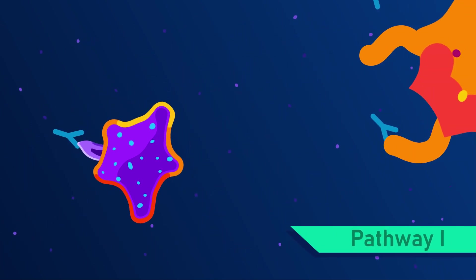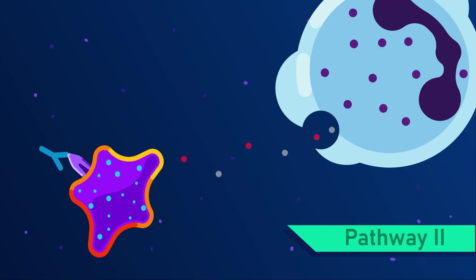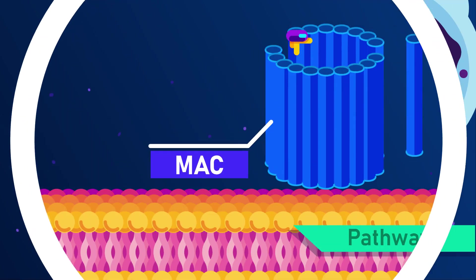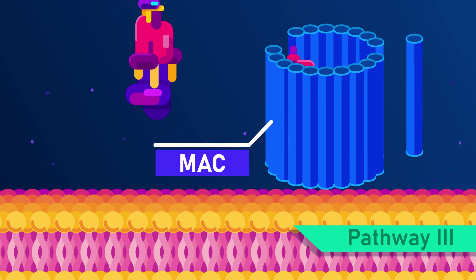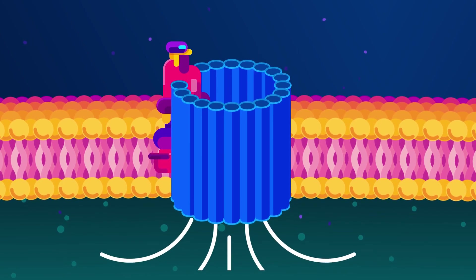These antibodies may opsonize cells and recruit macrophages, activate complement systems that recruit neutrophils, or activate a different complement system that creates a membrane attack complex that induces lysis of cells.